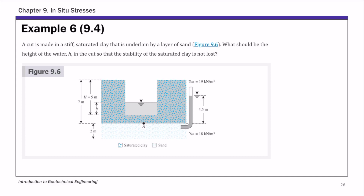This is Example 6 of Chapter 9. In this example, we're going to estimate the height of water — we call it small h — in the cut, so that the stability of the saturated clay is not lost. This example is similar to the previous one, Example 5, but the difference is that we know the depth of the cut, capital H, which is five meters. We're asked to estimate small h.